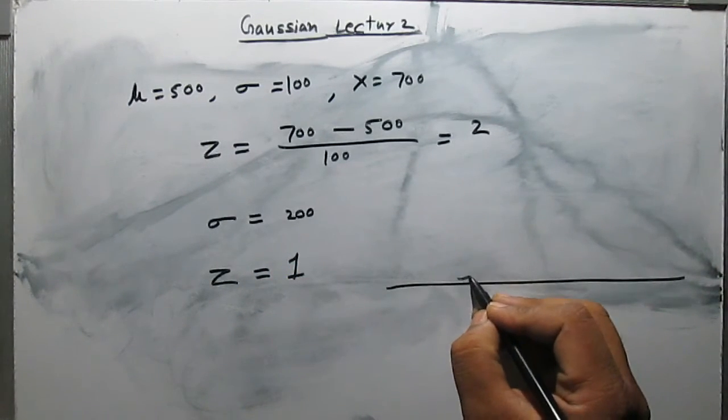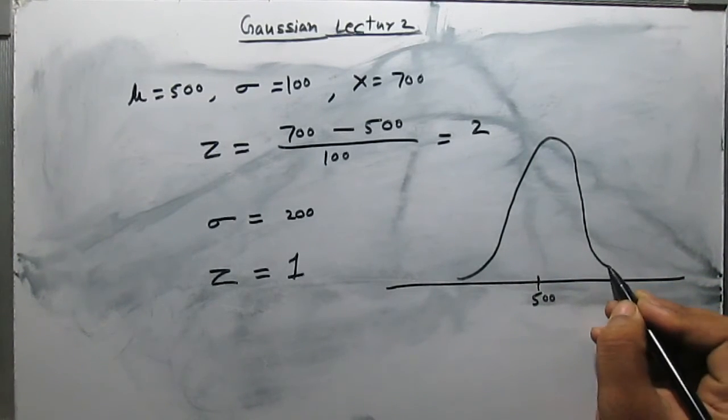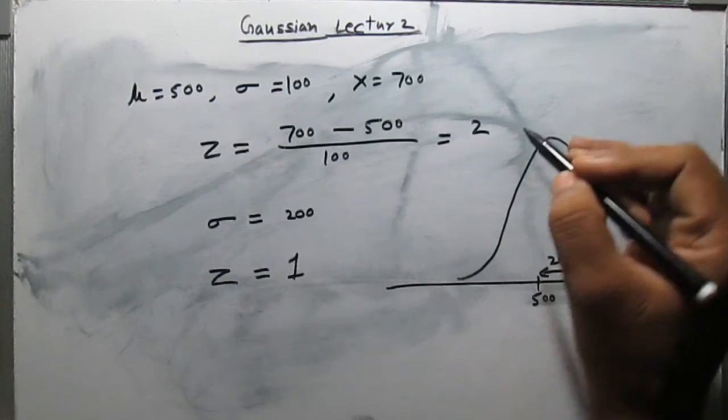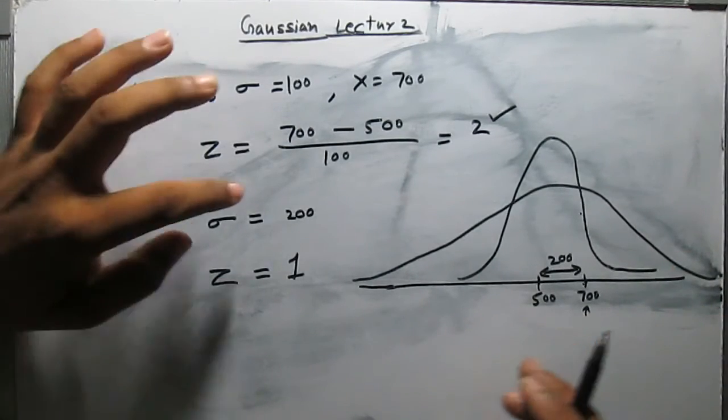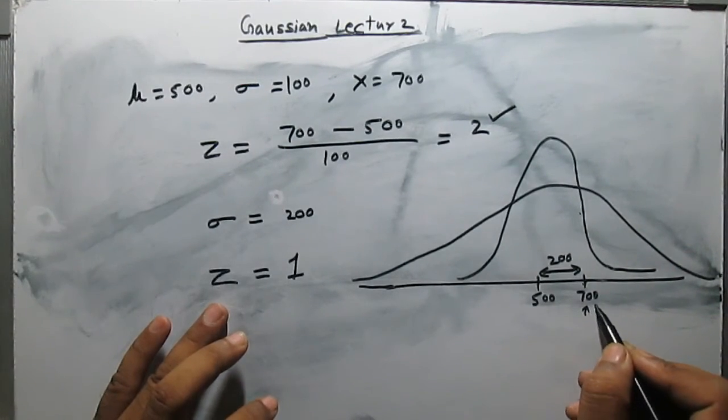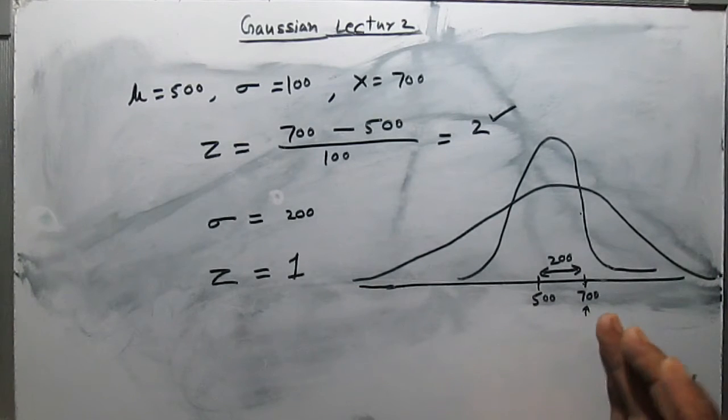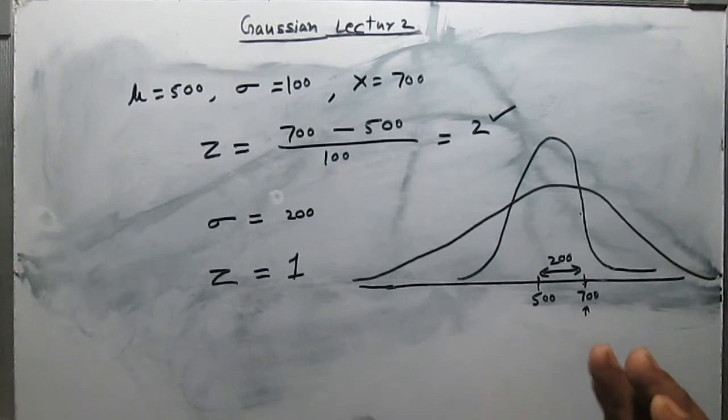Let us draw it again. This is suppose the first case, where the mean was 500 and suppose this value is 700. In the first case, this value 700 is two standard deviations away. If the Gaussian is changed where sigma is 200, then the value 700 is just one standard deviation away from the mean. See that although the deviation of 700 from the mean is 200 in both cases, but in the second case the value is one standard deviation away but in the first case the value is two standard deviations away. It means in the second case the value is much more likely or much more usual than the previous case.